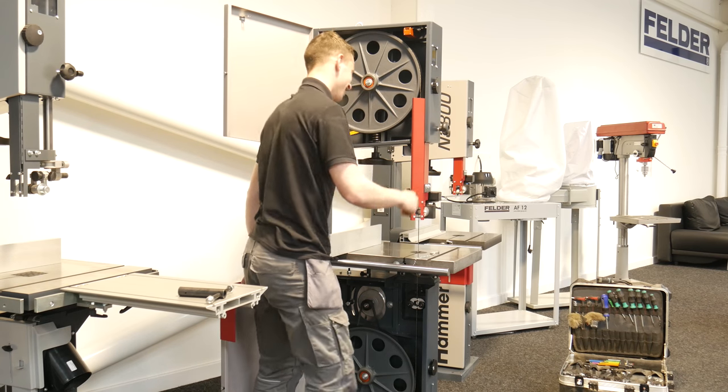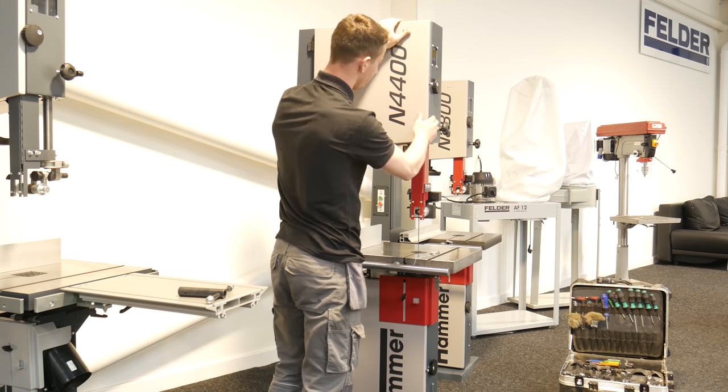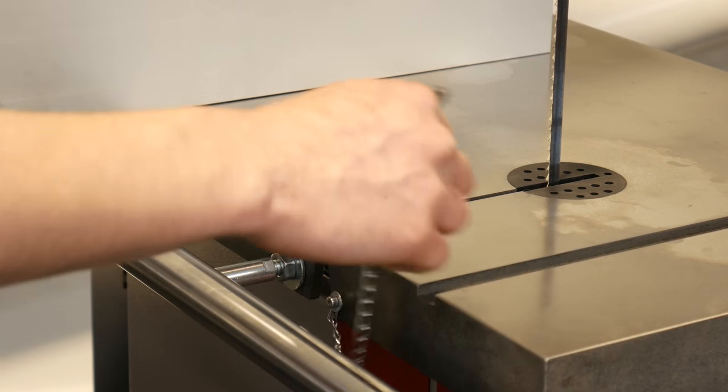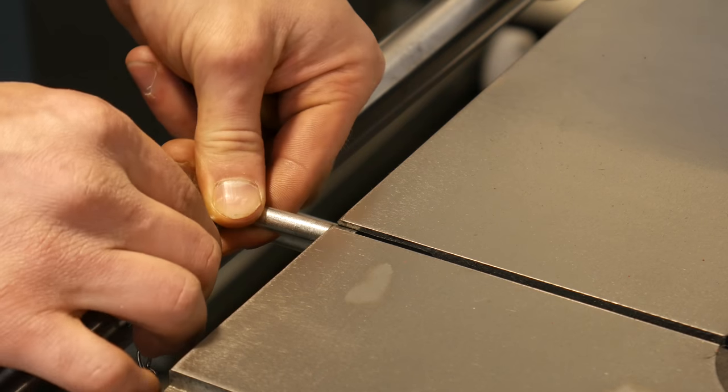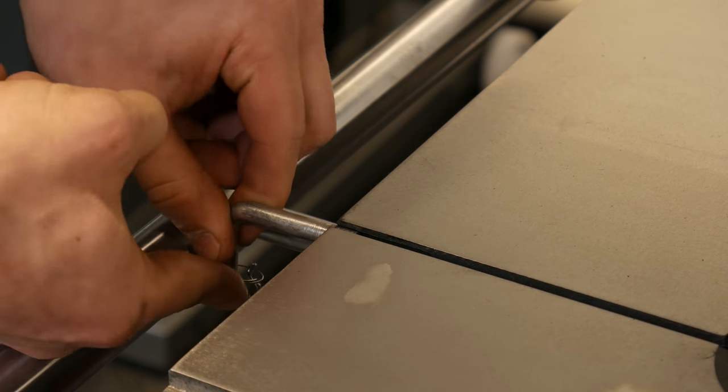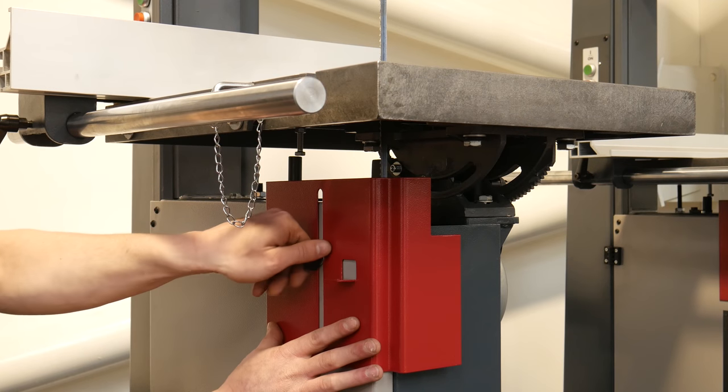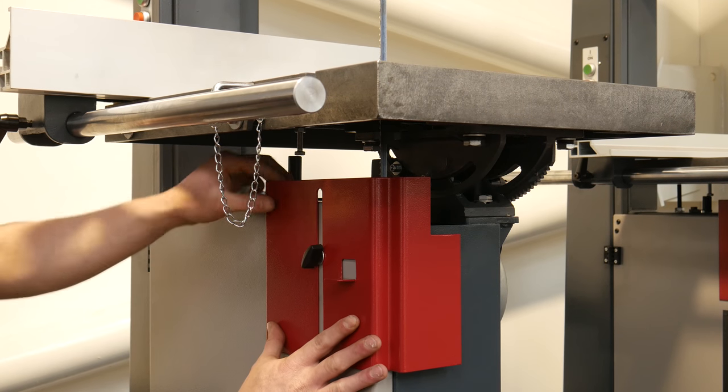The positioning pin should be inserted into the notch in the work table when the saw is in use for additional safety. The guard below the work table should be adjusted to suit the table's position.